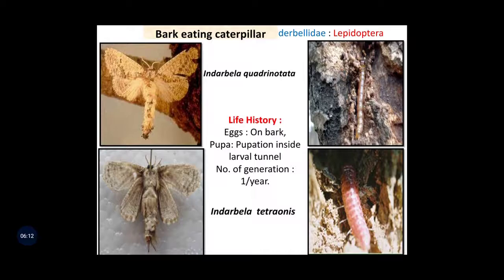The third major pest of Guava is bark eating caterpillar. There are two species: first one is Indarbela quadrinotata and second one is Indarbela tetraonis. Both species belong to family Cossidae and order Lepidoptera. Hence the damaging stage is always larva or caterpillar. Life history: eggs are deposited on the bark and pupation takes place inside the larval tunnel. The number of generations of this pest is one per year. Here we can see the adult and larva of both species of bark eating caterpillar.